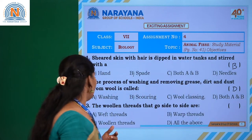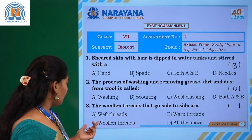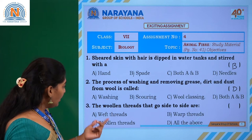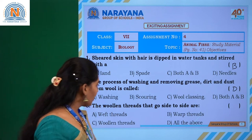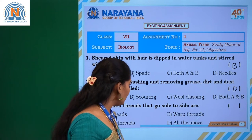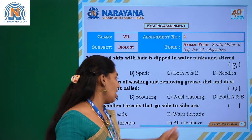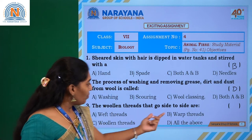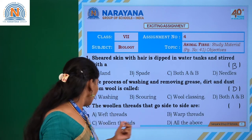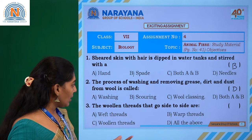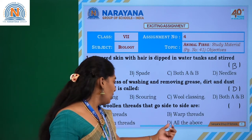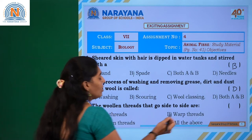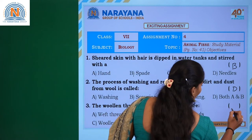The third question: the woolen threads that go side to side are - weft threads, warp threads, woolen threads, or all the above. The threads that go side to side are weft threads, so the answer is option A.